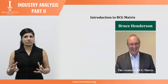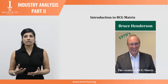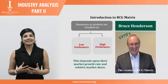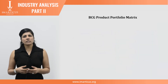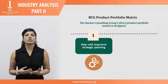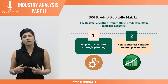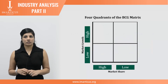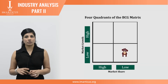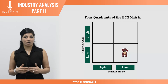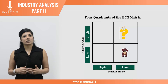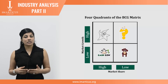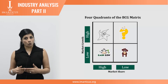The BCG matrix was developed by Bruce Henderson of the Boston Consulting Group in the early 1970s. Businesses or products are classified as low or high performance depending on their market growth and relative market share. The matrix is designed to help with long-term strategic planning by reviewing a product portfolio to decide where to invest, discontinue or develop products. The matrix has four quadrants: Dogs are products with low growth or market share; Question Marks are products in high growth markets with low market share; Stars are products in high growth markets with high market share; and Cash Cows are products in low growth markets with high market share.